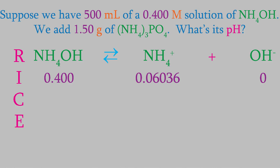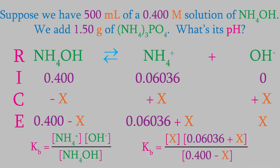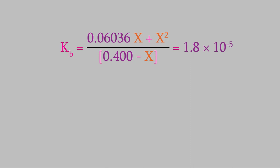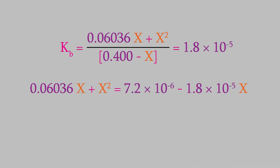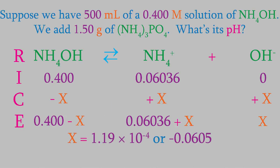Now the rest is a straightforward RICE table: the products increase by x and the reactants decrease by x, giving us the equilibrium concentrations. We write the equilibrium expression, plug in the concentrations, and Kb from appendix D is 1.8 × 10⁻⁵. Multiplying out the numerator and eliminating the denominator by multiplying both sides by (0.400 − x) gives another quadratic. Solving it, we get x equals 1.19 × 10⁻⁴ or negative 0.0605. The negative is impossible, so x equals 1.19 × 10⁻⁴.